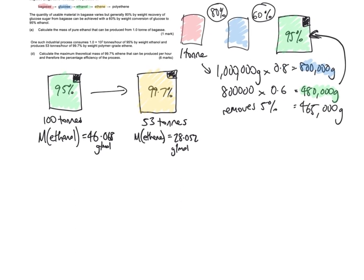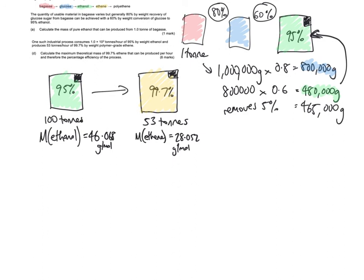Now let's move on to the next part. Here, one such industrial process consumes 100 tonnes per hour of 95% by-weight ethanol and produces 53 tonnes per hour of 99.7% by-weight polymer-grade ethene. And so you see that I've drawn those out for 100 tonnes, but it's only 95% pure, and the 53 tonnes, which is 99.7% pure.